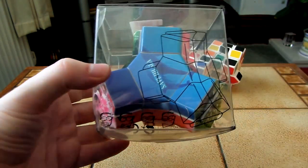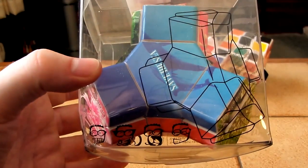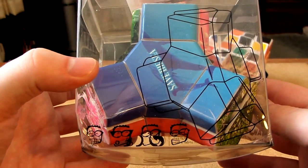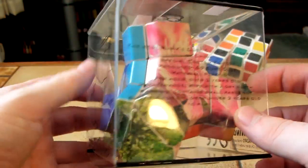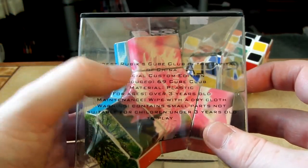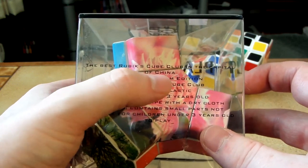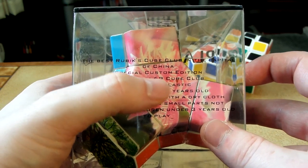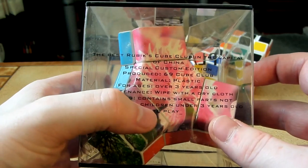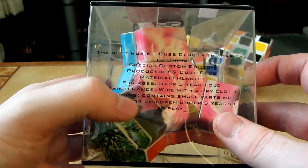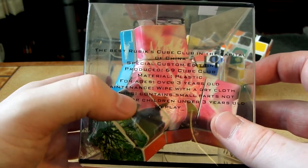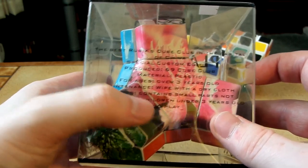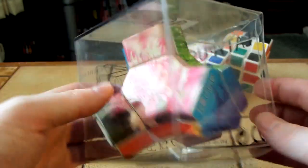We've got some faces there. The best Rubik's Cube Club in the capital of China. Special Custom Edition. Produced 69 Cube Club Material Plastic. For ages over 3 years old. Maintenance, wipe with a dry cloth. Warning, contains small parts. Not suitable for children under 3 years old to play.